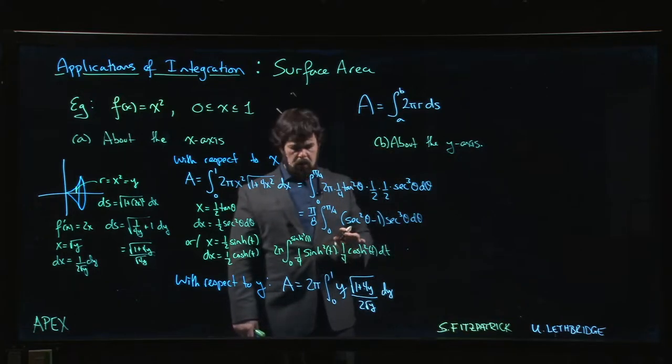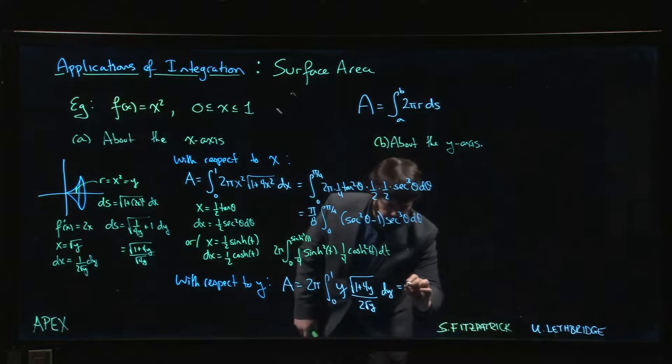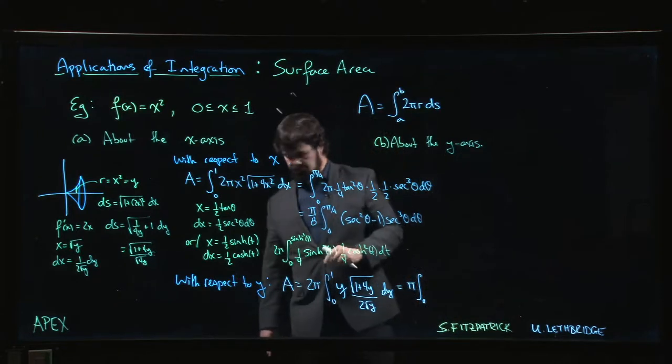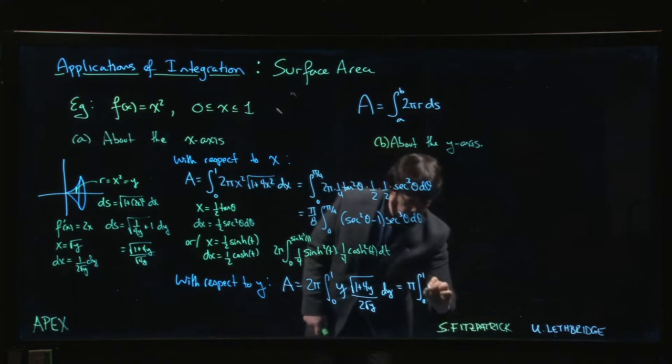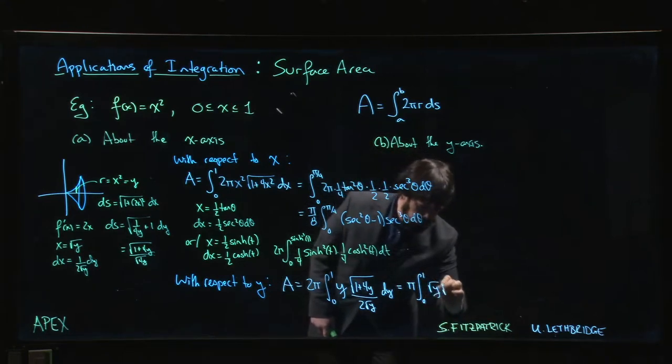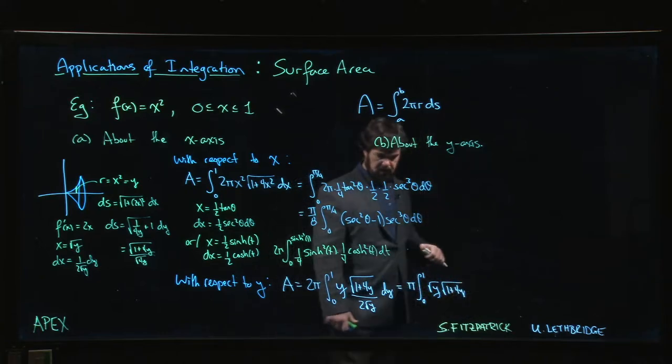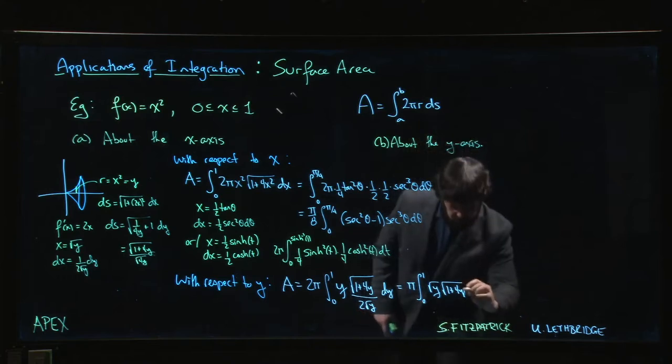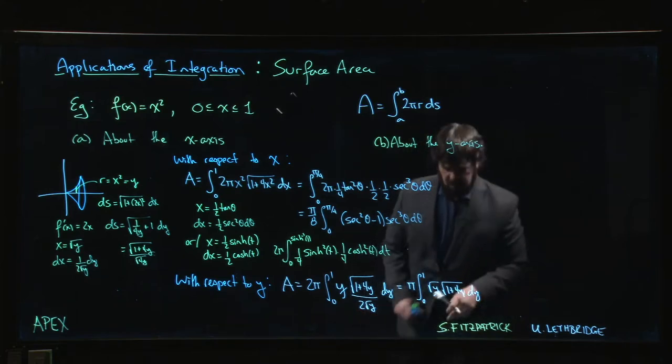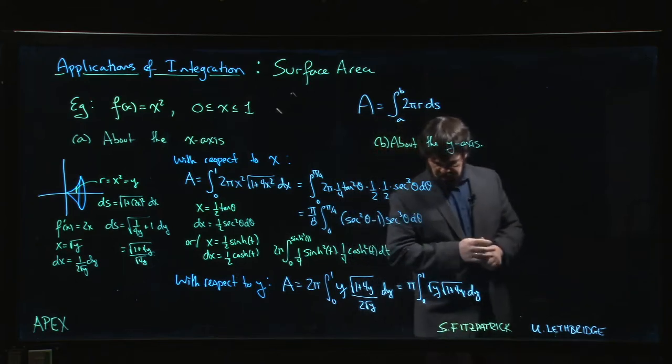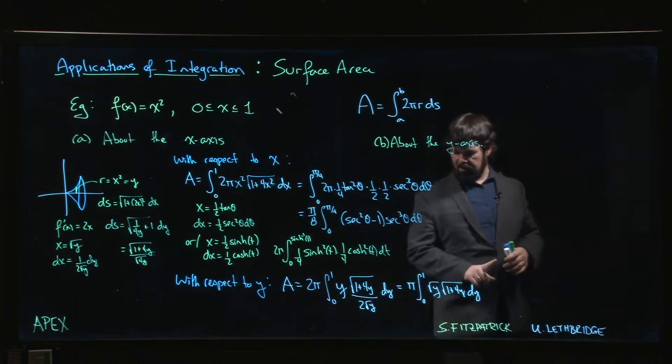It's actually not that bad. This becomes π integral from zero to one, root y times 1 plus 4y. Well I lied, it's still bad. dy.